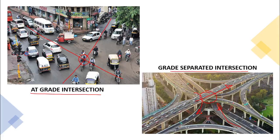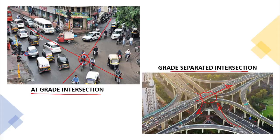Even two flyovers over each other are a grade separated intersection. For those living in PCMC who have been to Nashik Fata, there you have what is commonly called a double-decker flyover, but the technical term is grade separated intersection. One road goes from the top and another from below. Similarly, grade separators in PCMC are grade separated intersections, where a straight-going road goes below through a vehicle underpass and another road crosses it from above.